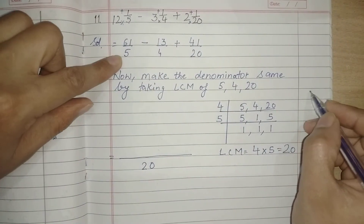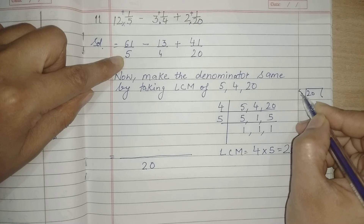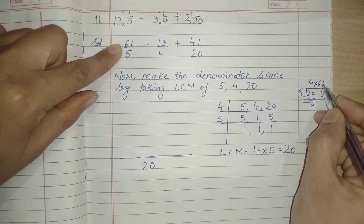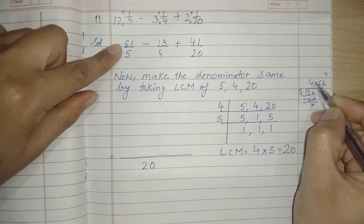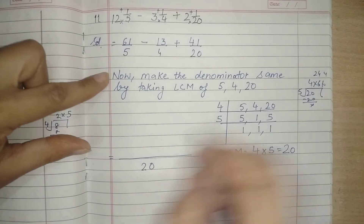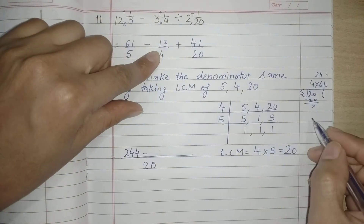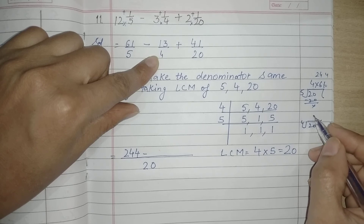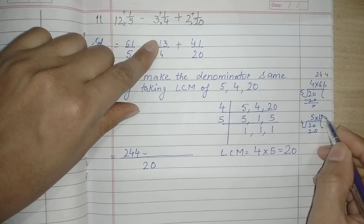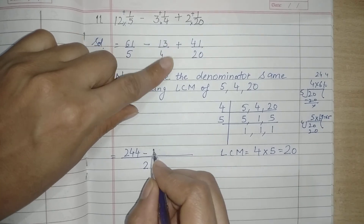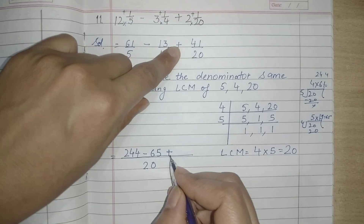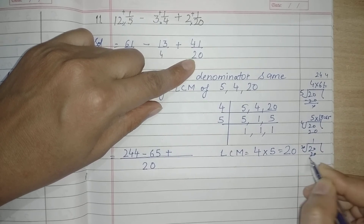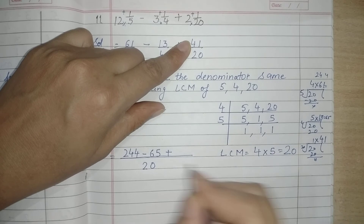Next step: 20 ko first wale fraction ki denominator se divide karo — yaani 20 ko 5 se divide karo — so aayega 4. Aur 4 ko 61 se multiply karo. So: 1 four is 4, aur 6 four is 24 — this is 244. Same we will do with the next fraction: next fraction ka denominator hai 4, tho 20 ko 4 se divide karo — 4 fives are 20, aur 5 ko 13 se multiply karo — 13 fives are 65. So write 65 here. Now next plus sign hai, aur last fraction ka denominator hai 20: 20 ko 20 se divide karenge — aayega 1, aur 1 ko 41 se multiply karo — that is 41.